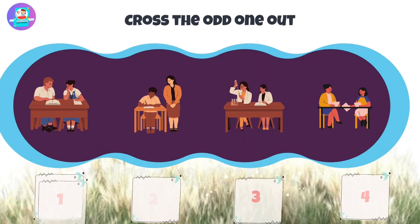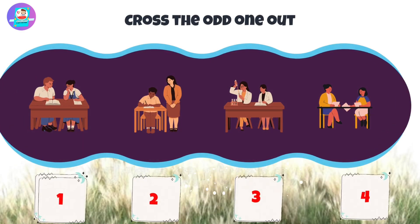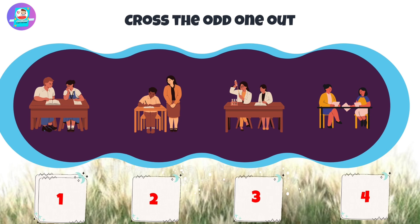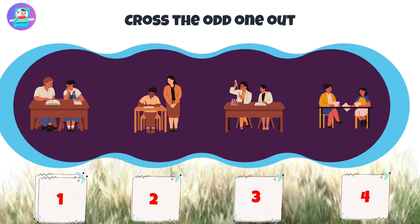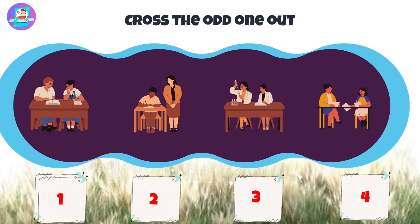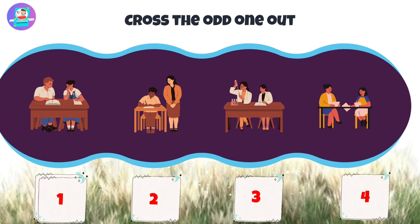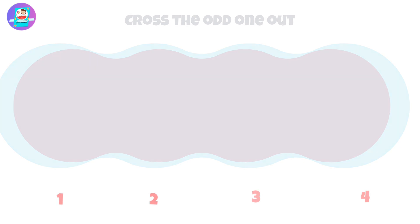Okay, next, there are 4 pictures: 1, 2, 3, 4. Put the odd one out.